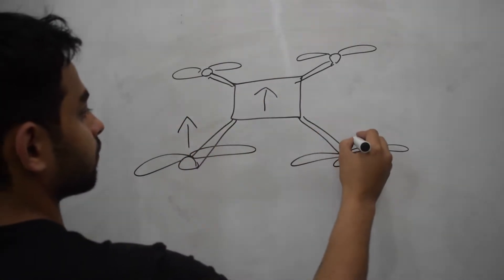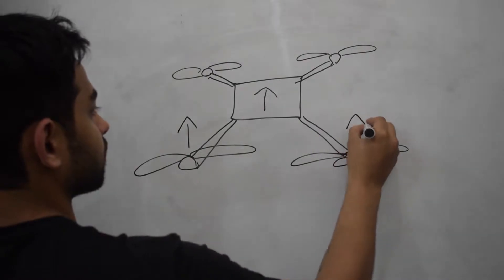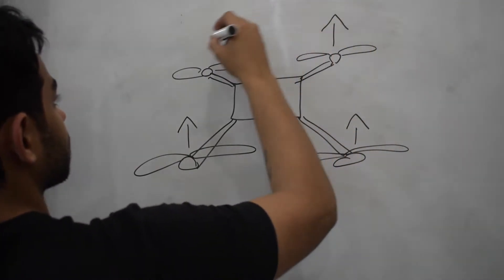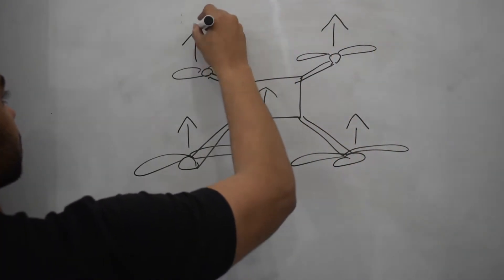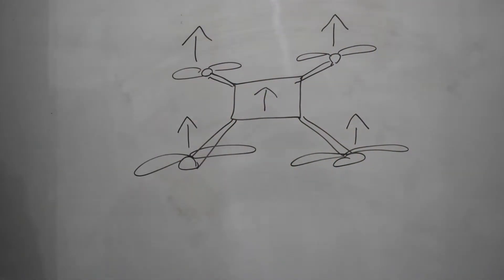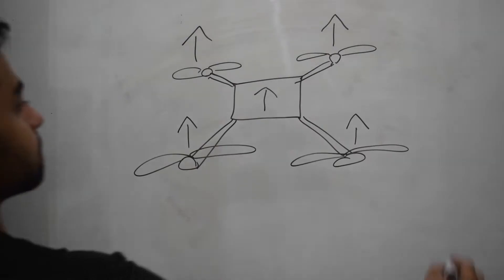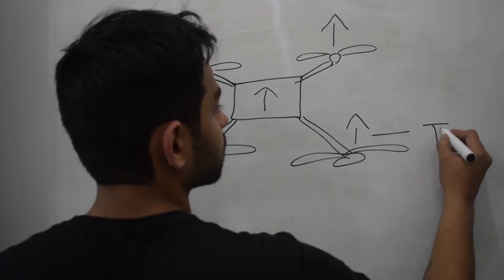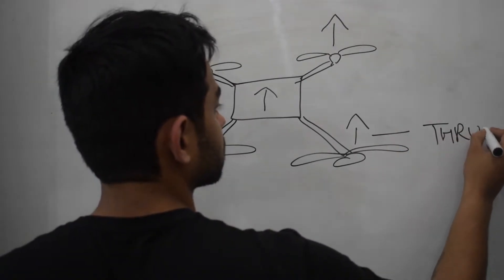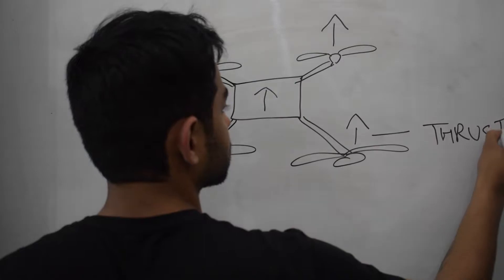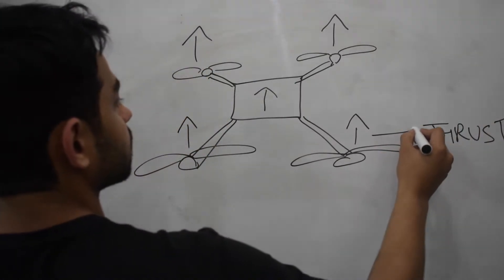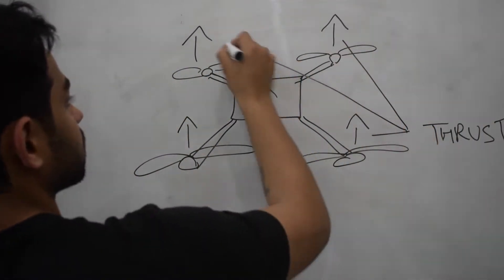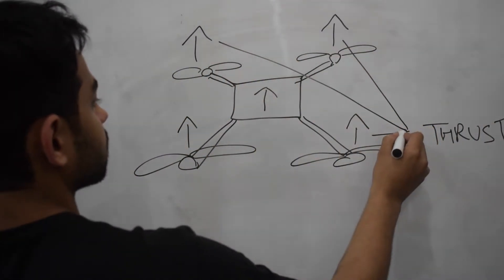My quadcopter is facing towards the top of the board and this is a top view. The upward forces generated by the rotation of the propellers is called thrust. These arrows from the blades signify thrust.